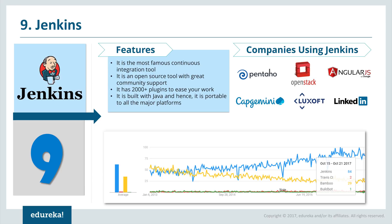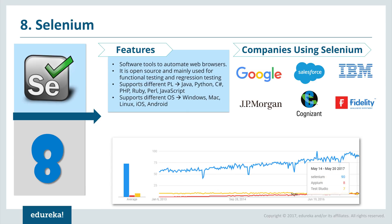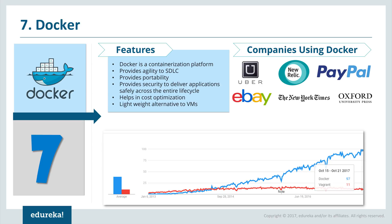Selenium is a continuous testing tool that provides a suite of software tools to automate web browsers. It is open source and mainly used for functional testing and regression testing. It supports multiple programming languages including Java, Python, C#, PHP, Ruby, Perl, and JavaScript. It works on various operating systems such as Windows, Mac, Linux, iOS, and Android. Companies that use Selenium include Google, Salesforce, IBM, JP Morgan, Cognizant, and Fidelity. Selenium is way ahead of other testing tools such as APM and Test Studio.